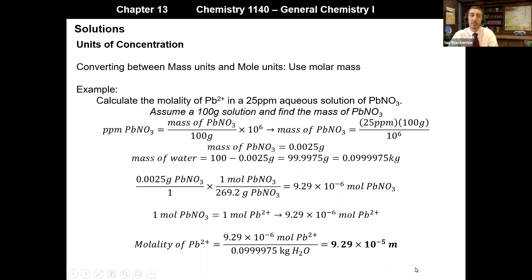Just looking at that exponent, you can see why it might be more useful to express concentration as 25 parts per million versus a molality or molarity with an exponent of 10⁻⁵. This is how we deal with units of concentration in solutions, whether they be aqueous or non-aqueous solutions.